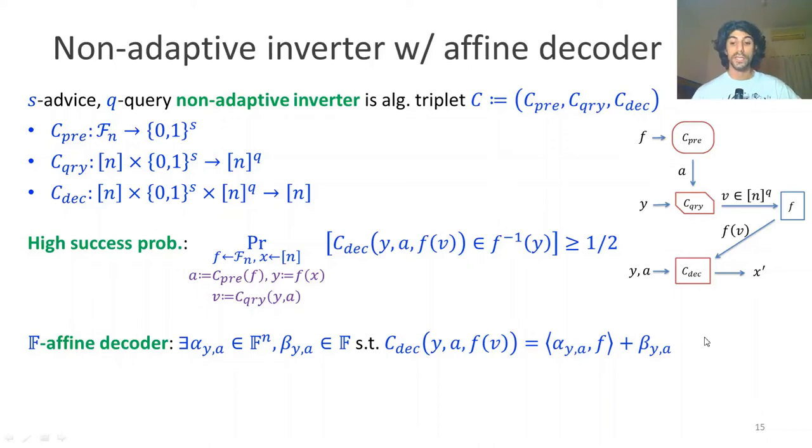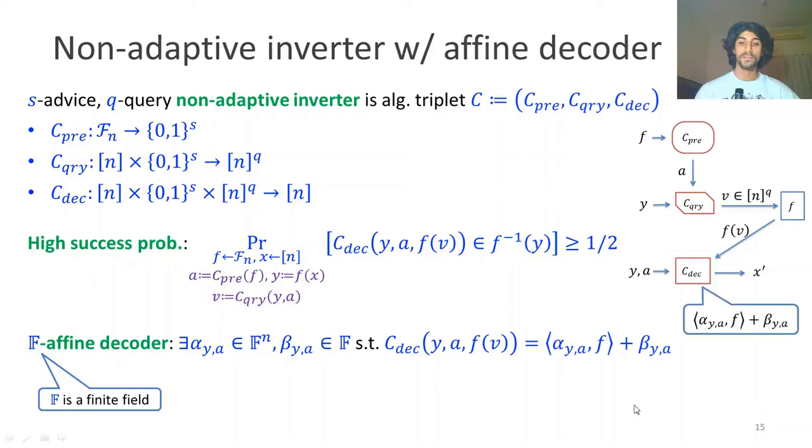This time, we concentrate on a very limited kind of decoder: an affine decoder. Given any fixed values for y and a, the output of the decoder must behave like an affine function over the function f, if we treat f as a vector. Here we assume this all happens over a finite field. The inner product between some vector and f, where the function is simply treated as a vector.